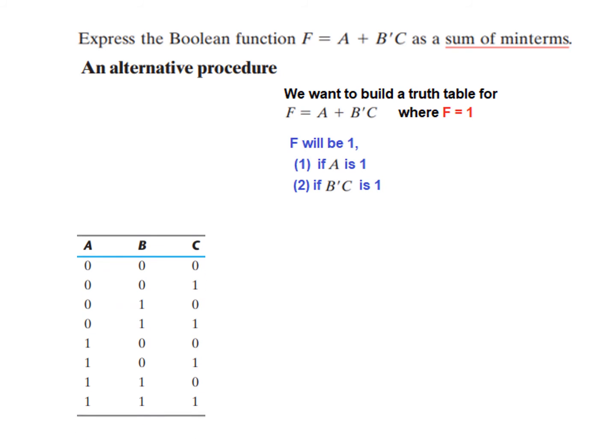So what we do, we go to the truth table, and straight away see when will A is 1. What are the, so you can see these 4 terms, A is 1 here, so we can just mark F is equal to 1 at the place of these 4. Okay, so that is the first part.